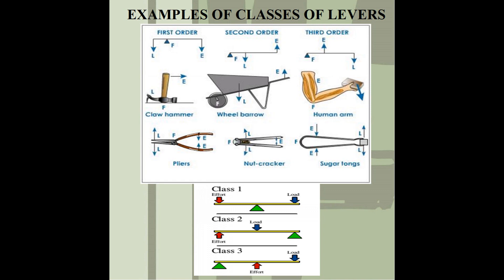Here are some examples of the classes of lever. Quick review: class one — you have the effort, in the center you have the fulcrum, and at the end you have the load. Class two — you have the effort, in the center you have the load, and at the end you have the fulcrum. Class three — you have the fulcrum, the effort in the center, and the load at the end.